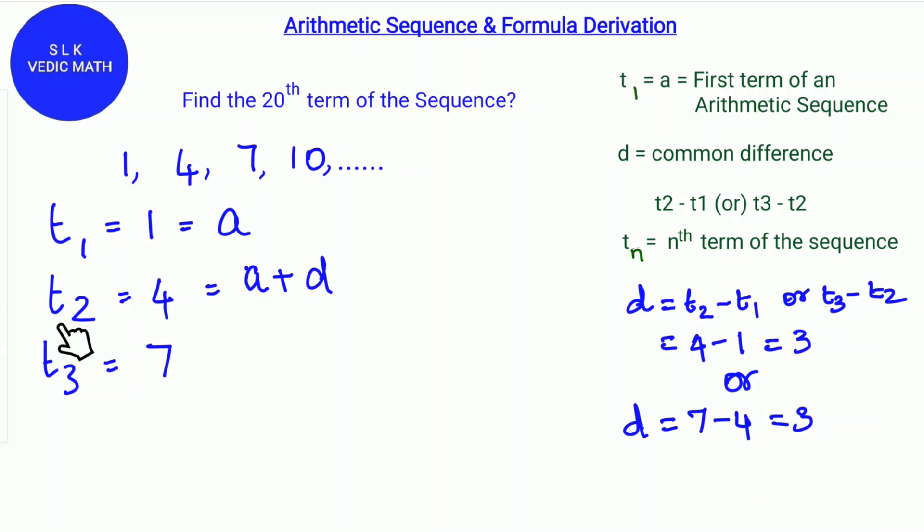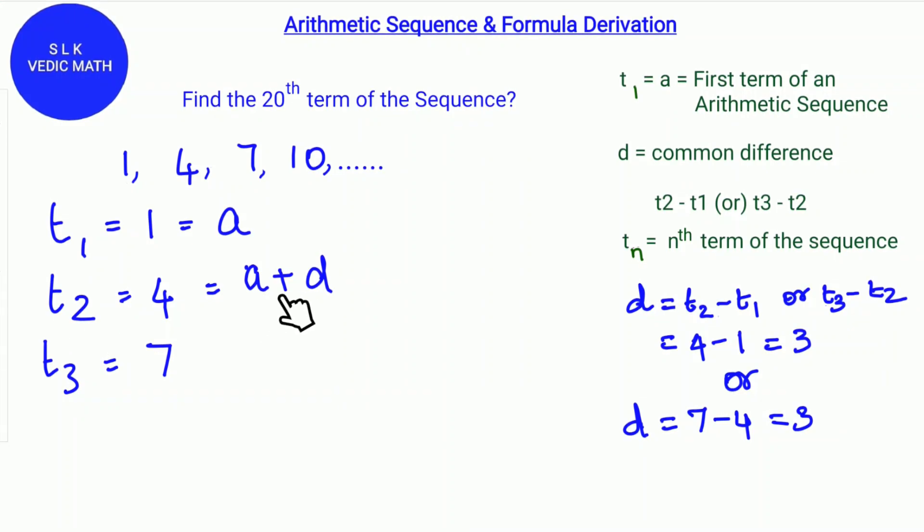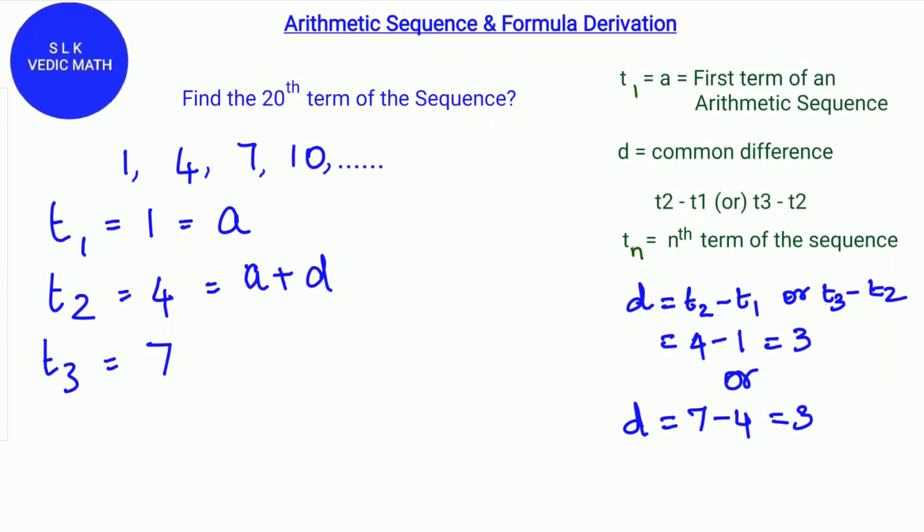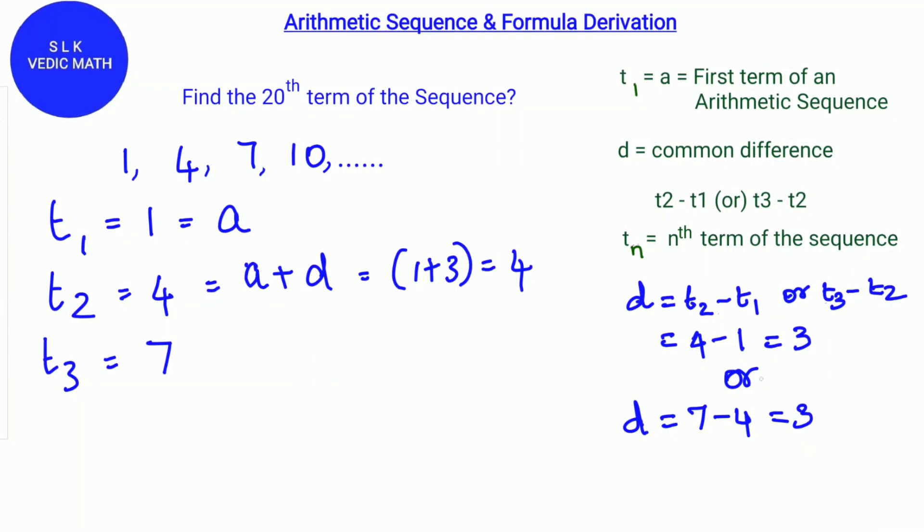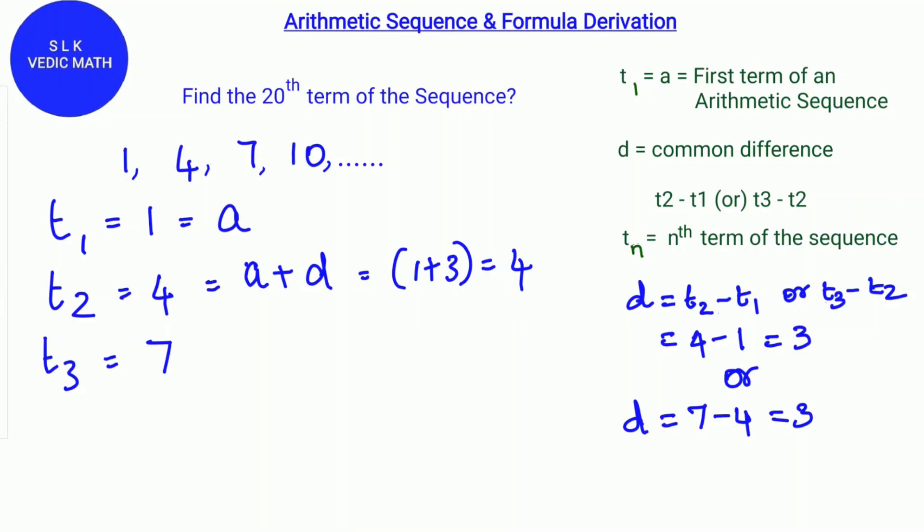T2 is a plus d. So a is 1 and d is 3. So 1 plus 3 is 4.